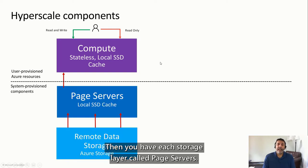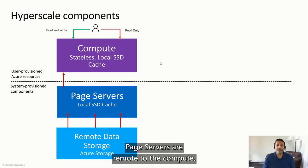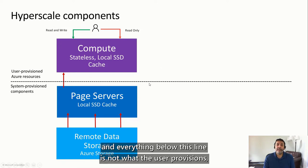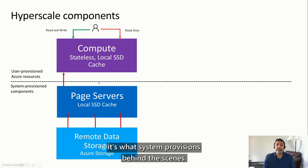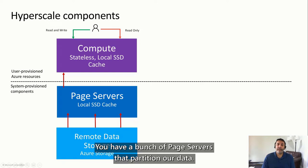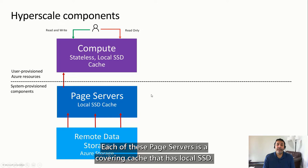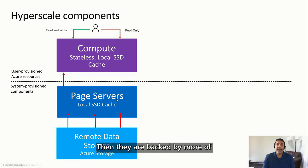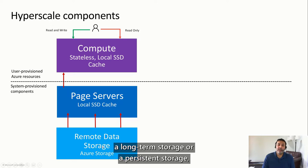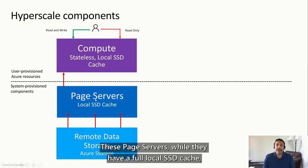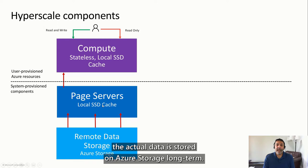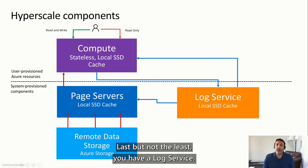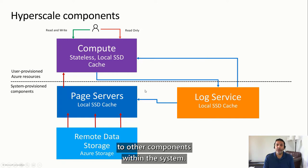Then you have a storage layer called page servers. Page servers are remote to the compute, and everything below this line is what the system provisions behind the scenes, not what the user provisions. You have a bunch of page servers that partition out data. Each of these page servers is a covering cache that has a local SSD, and then they are backed by long-term or persistent storage, which is Azure Storage. Last but not the least, you have a log service — all your writes go to the log service, and it's the log service's responsibility to distribute them to other components within the system.